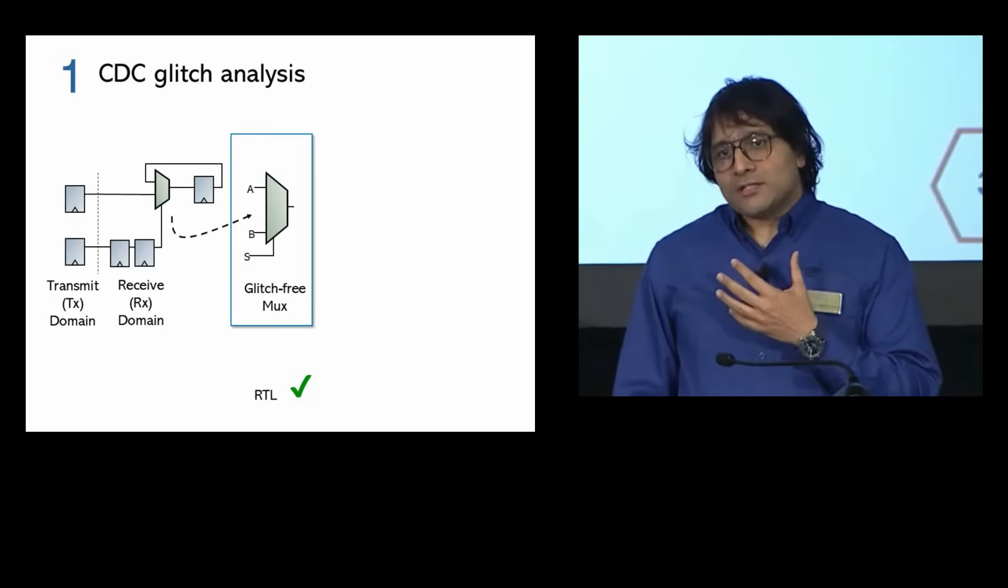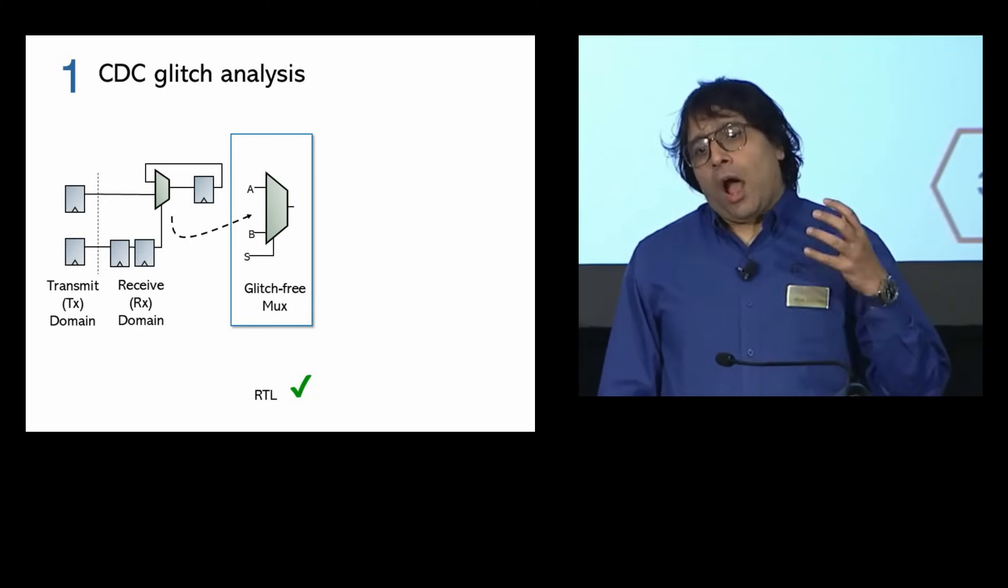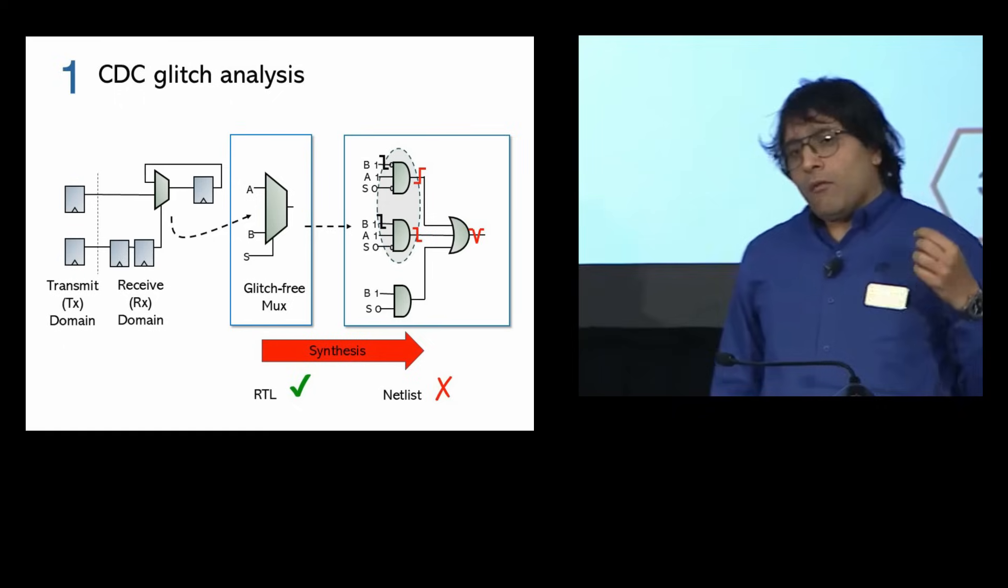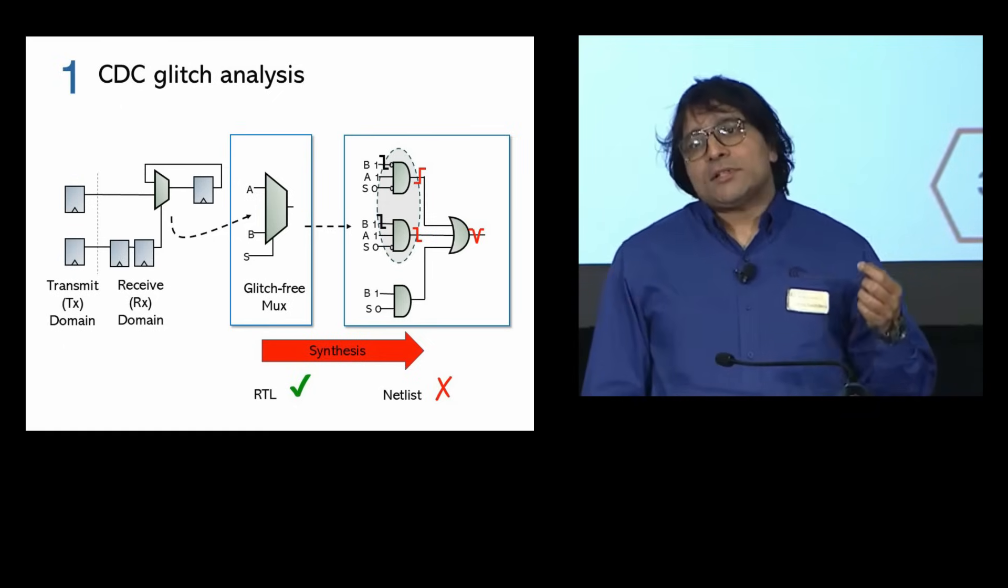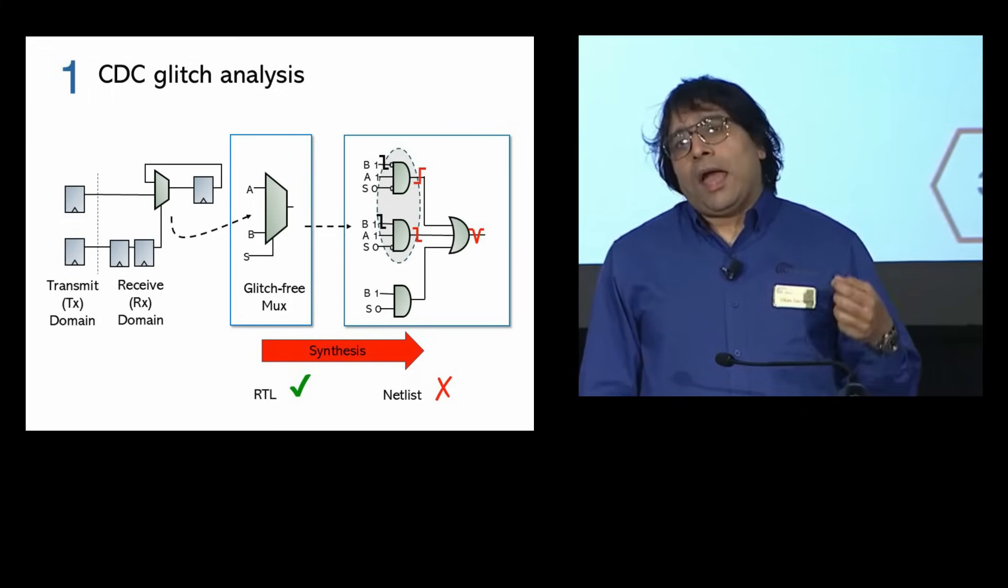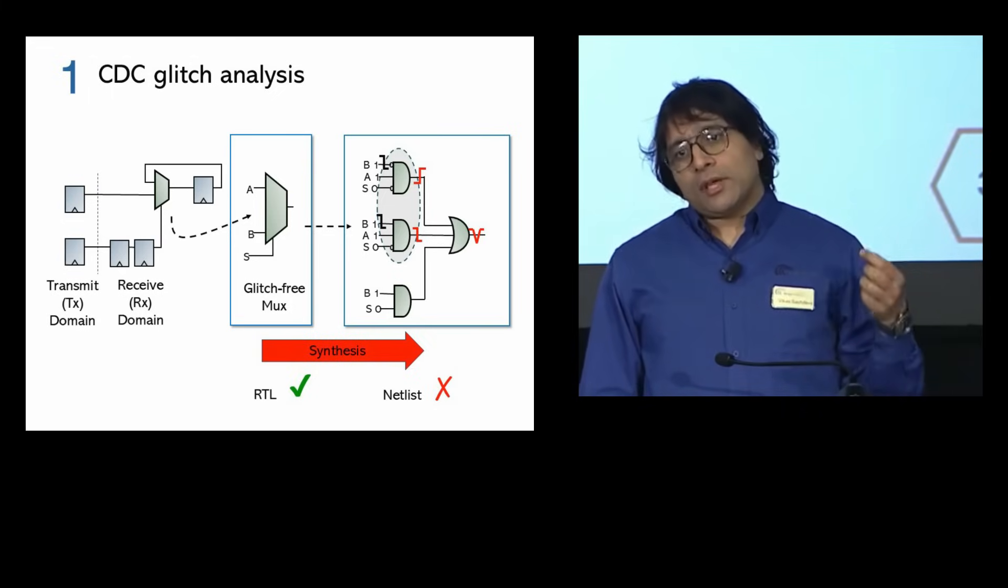Now look at this example. At RTL level, output follows the input, so the MUX is behaving correctly, while at netlist level, synthesis or optimization tools can modify the MUX to AND/OR gates, and this functionality issue can cause glitch problems which is catastrophic.